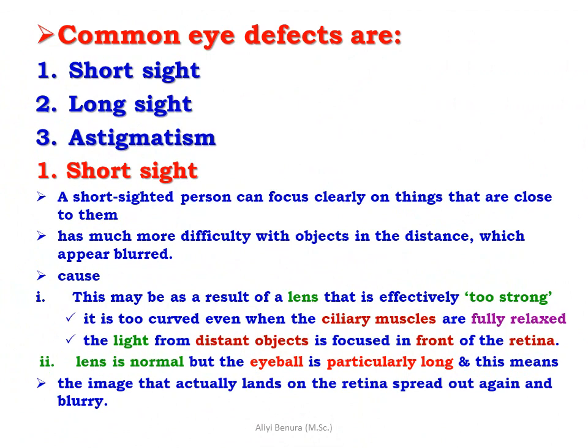The common eye defects are short-sightedness, long-sightedness, and astigmatism. A short-sighted person can focus clearly on things close to them but has much more difficulty with distant objects, which appear blurred. This may result from a lens that is effectively too strong — too curved — even when the ciliary muscles are fully relaxed, causing light from distant objects to be focused in front of the retina. Alternatively, the light is normal but the eyeball is particularly long, meaning the image that lands on the retina is spread out and blurry.